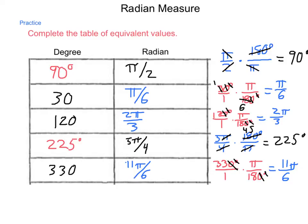We can also use the unit circle values from lesson 13.2 to find trigonometric values. For 90 degrees, the sine value is 1. So the sine of π/2 radians is also 1. We can work through more examples during discussion time. But what else can we do with radians?